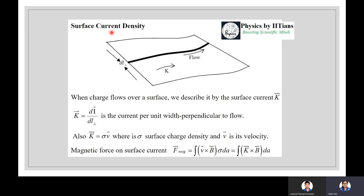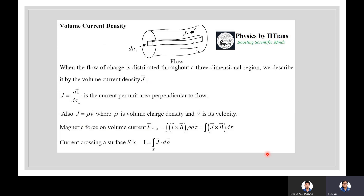For charge flowing over a surface, we describe it by surface current density K. The vector K = dI/dl_⊥, the current per unit width perpendicular to flow. Also K = σv, where σ is the surface charge density and v is the velocity. The magnetic force on a surface current is F_magnetic = ∫(v × B)σ da = ∫(K × B)da.